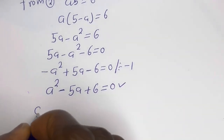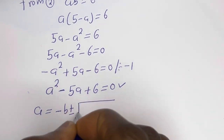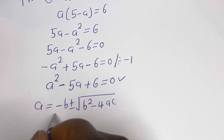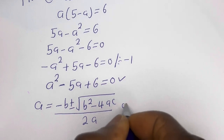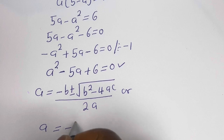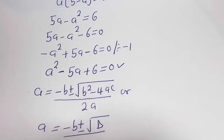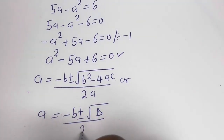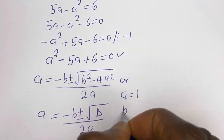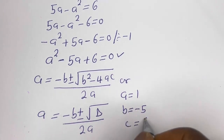Using the quadratic general formula: a equals negative b plus or minus square root of b squared minus 4ac, all over 2a. From our equation a squared minus 5a plus 6 equals 0, we identify the coefficients: a equals 1, b equals negative 5, c equals 6.